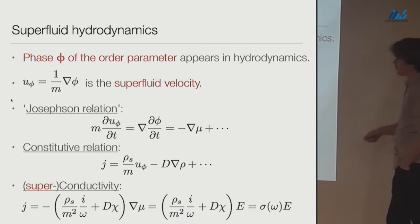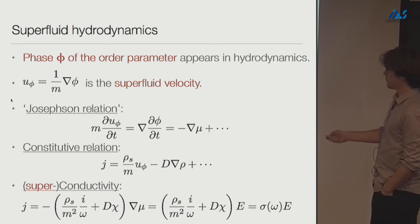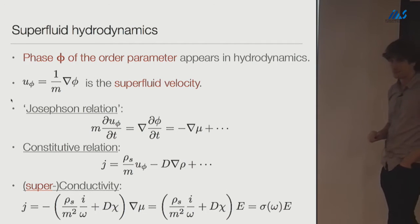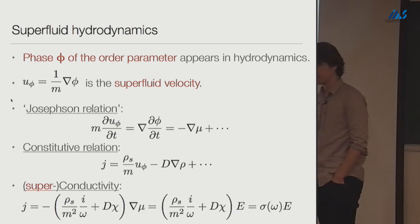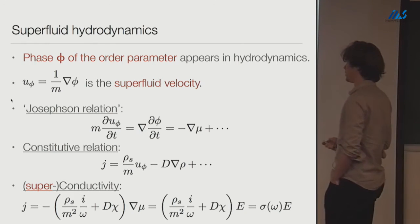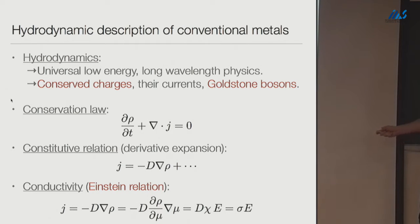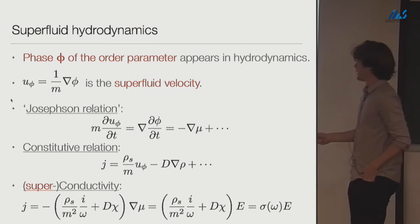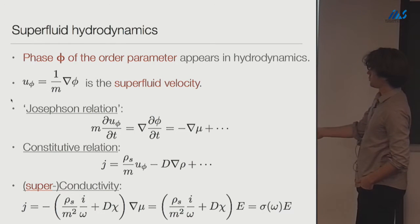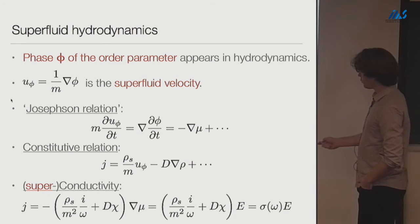In a superfluid we have an additional hydrodynamic variable: the Goldstone boson, which is the phase of the broken U(1). This introduces the superfluid velocity, defined as the gradient of phi divided by M — where M is just a mass scale, not any single-particle mass. The superfluid velocity doesn't obey a conservation law; instead it has the Josephson relation from gauge invariance: d-phi/dt equals the chemical potential mu.